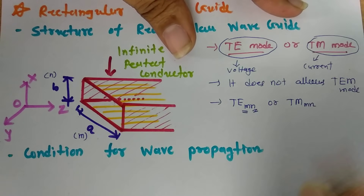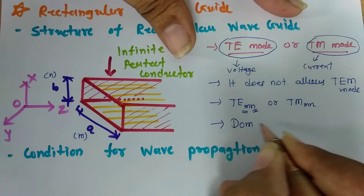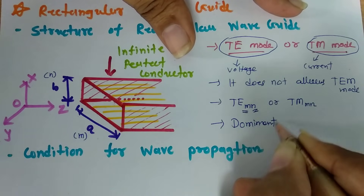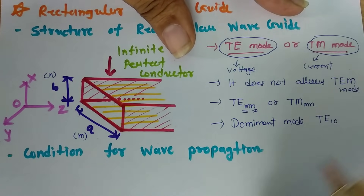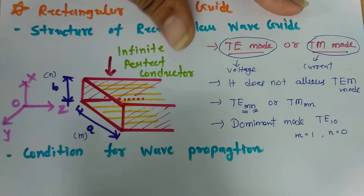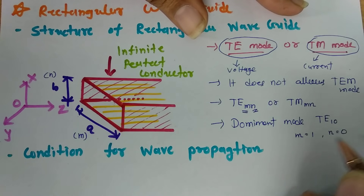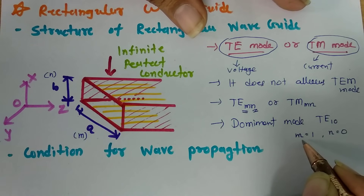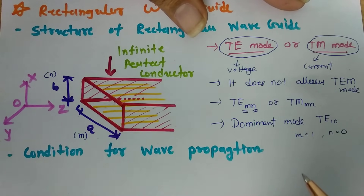For example, the dominant mode for rectangular waveguide is TE10. In the case of TE10, M equals 1 and N equals 0. I will explain later how M and N affect the cutoff frequency, which will give a clear idea about how things work with rectangular waveguide.